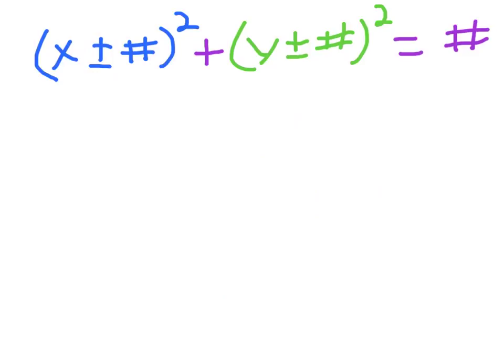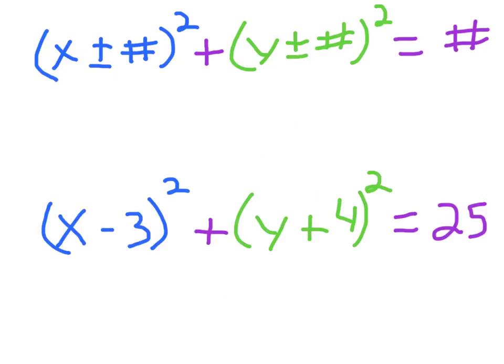We know the equation in general looks like this. In parentheses, we have x plus or minus some number, and that quantity is squared. Then there's a plus sign, and then there's another set of parentheses, and it's y plus or minus some other number, that quantity squared, and all that equals some number. So here would be an example: x minus 3, quantity squared, plus y plus 4, quantity squared, equals 25.